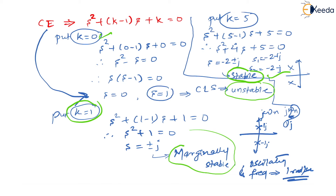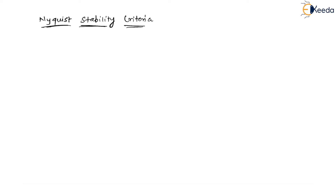We have to check this same thing using frequency domain analysis — that is why we use the Nyquist stability criteria. Nyquist stability criteria is based on a mathematical tool called the Principle of Argument.